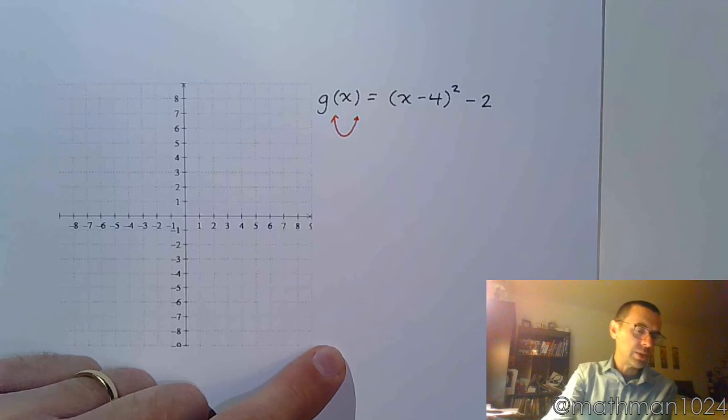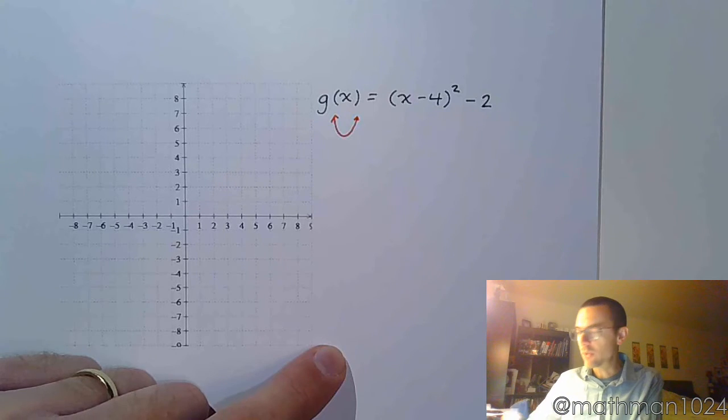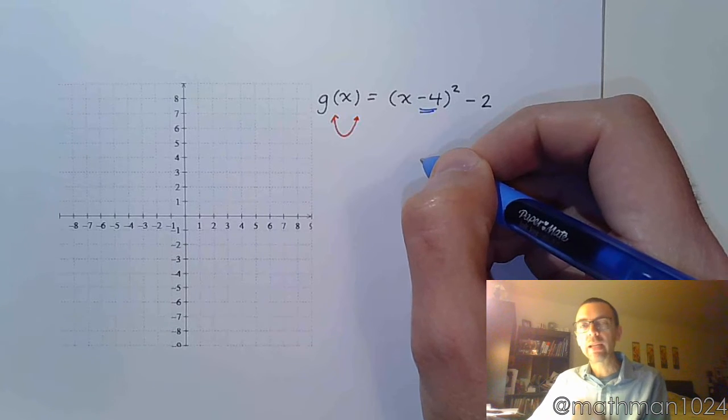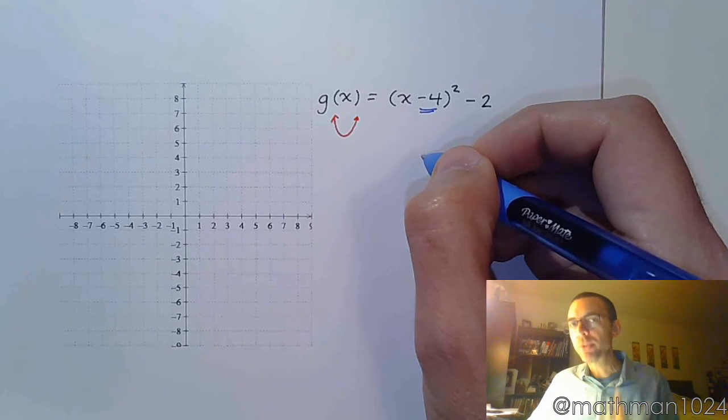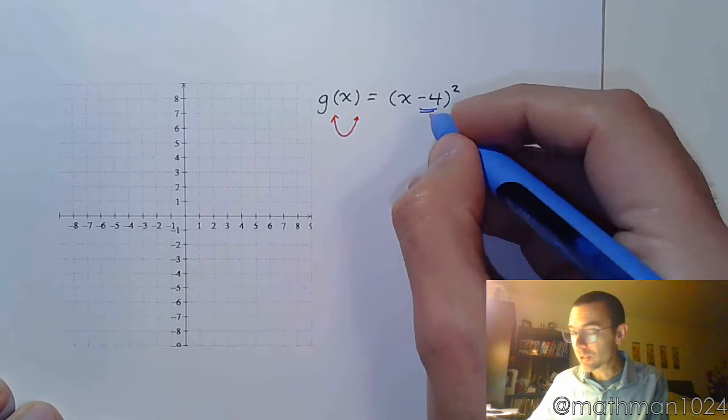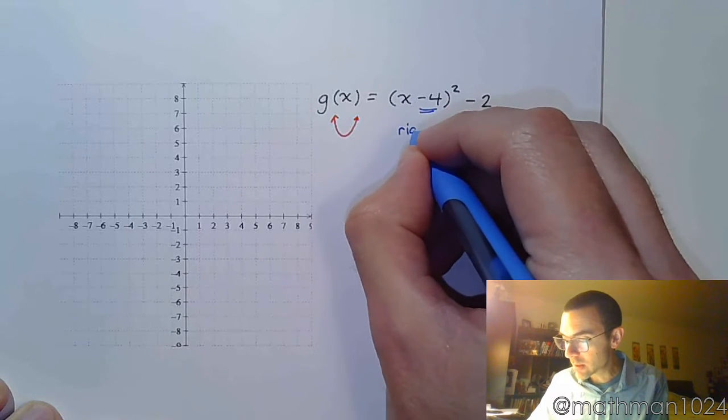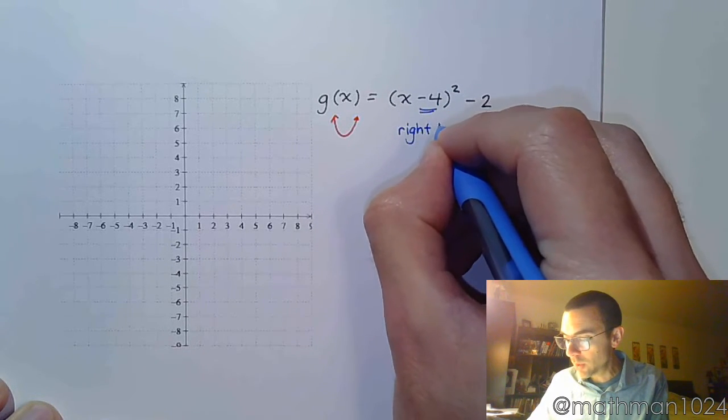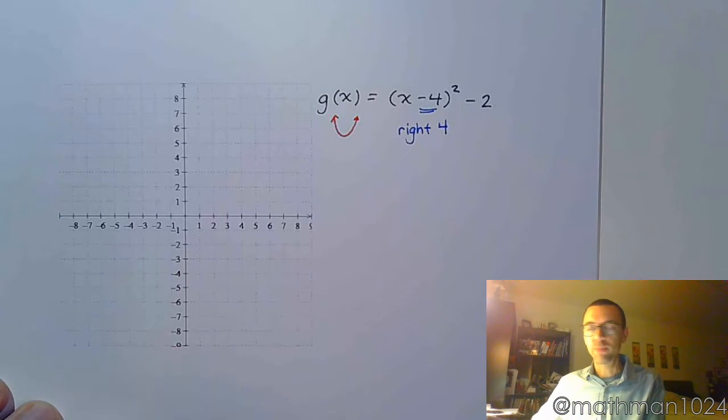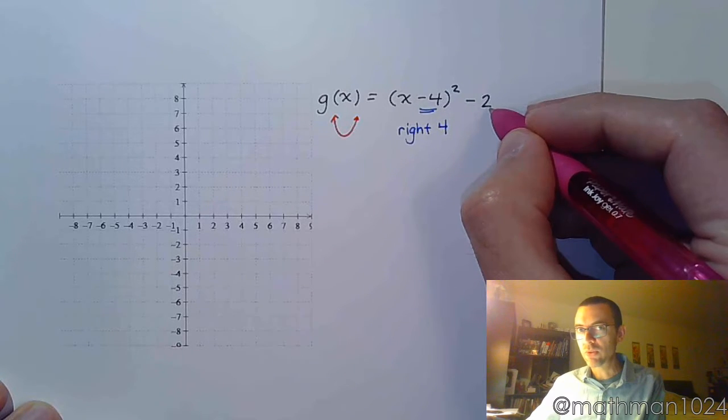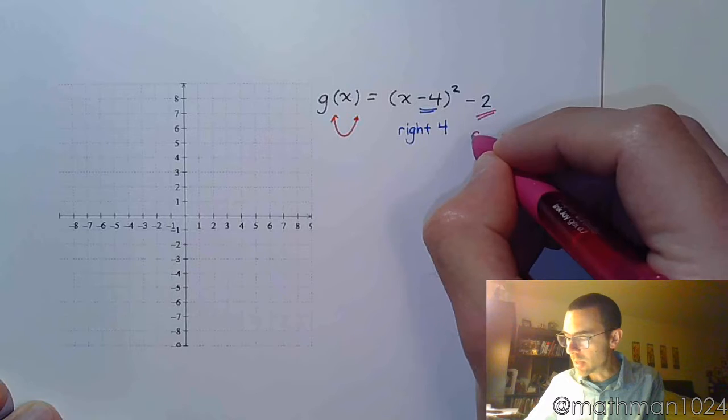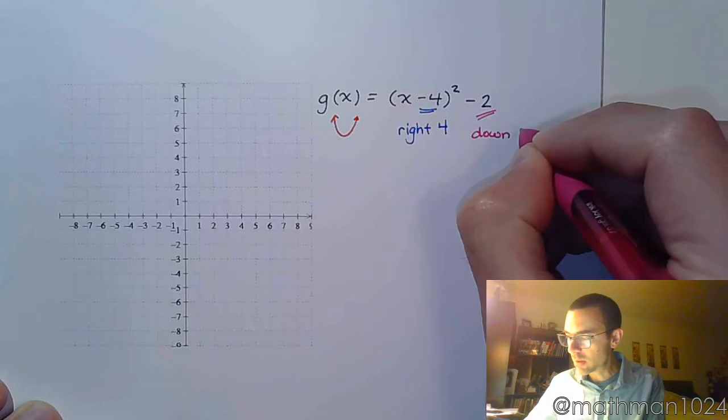All right, so what have we done with this? How have I shifted up, down, left, and right? Inside is where you have your horizontal shift, so I had inside, horizontal, opposite of what I see. I see minus 4. I'm actually going to go plus 4, so that means I'm going to go to the right for units. And then, over, outside, I see negative 2. It's a vertical shift, exactly what I see. So vertically, I'm going to go down 2 units.